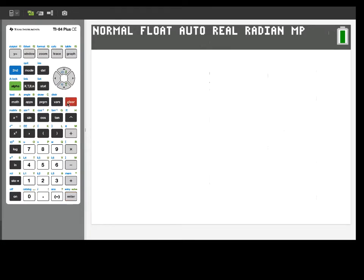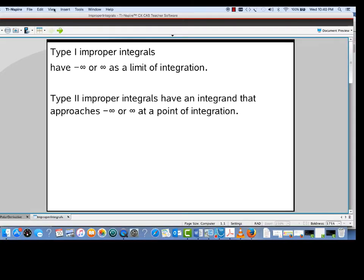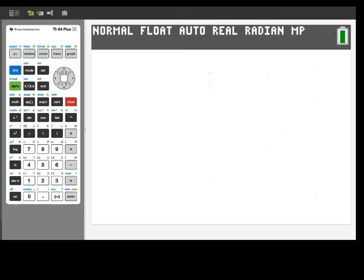Let's start out with a quick review of improper integrals. Improper integrals come in two types. One type has minus infinity or infinity as a limit of integration. These are sometimes called type 1 improper integrals. Type 2 improper integrals have an integrand that actually approaches minus infinity or infinity at one of the points of integration, often at an endpoint.